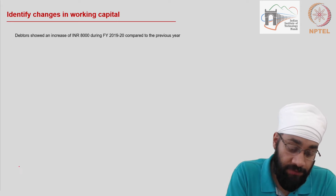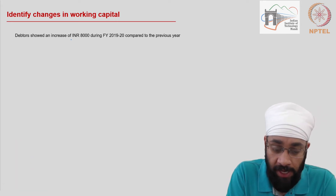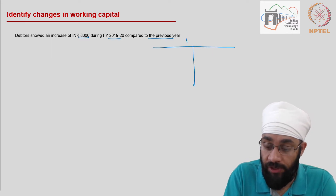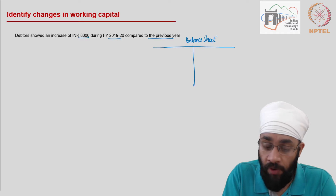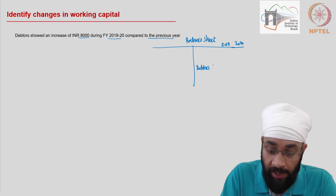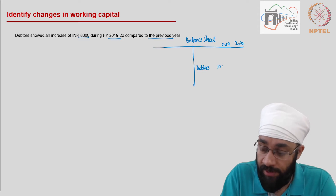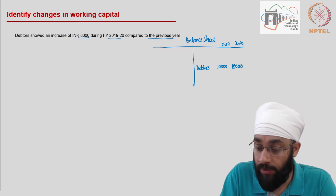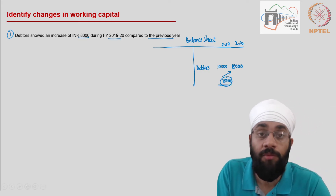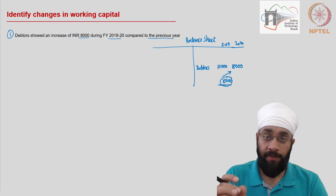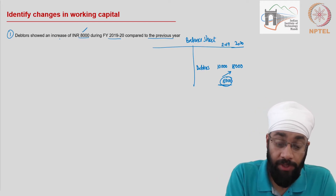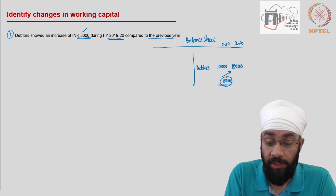Let's look at the first transaction: debtors showed an increase of 8,000 during this financial year compared to the previous year. Imagine a balance sheet showing two years of data — 2019 and 2020. Debtors were 10,000 and now they are 18,000, an increase of 8,000. This transaction only gives the change; typically you'd be given a full balance sheet and calculate the change yourself.